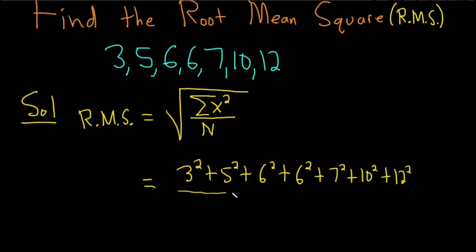It's all being divided by n. So n is how many numbers we have. So we have 1, 2, 3, 4, 5, 6, 7 numbers. So we have a 7 here on the bottom, and then we take the square root of all that.